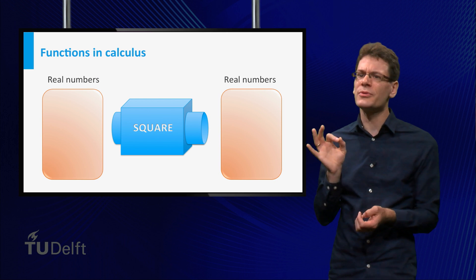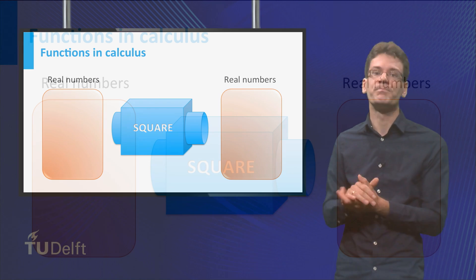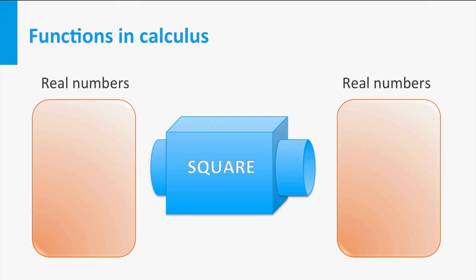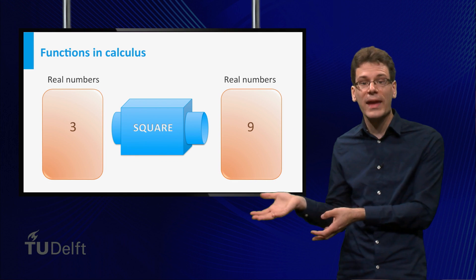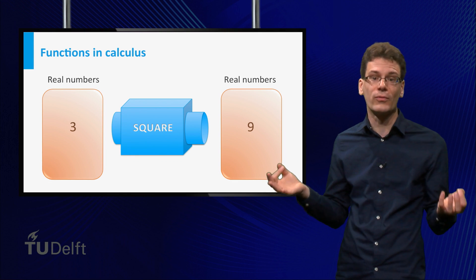But it still helps to use the picture of functions as machines. For example, take the square function. It is a machine that accepts any real number as input — for example 3 — and produces its square, in this case 9, which is again a real number. In this case, both domain and co-domain are the set of real numbers.